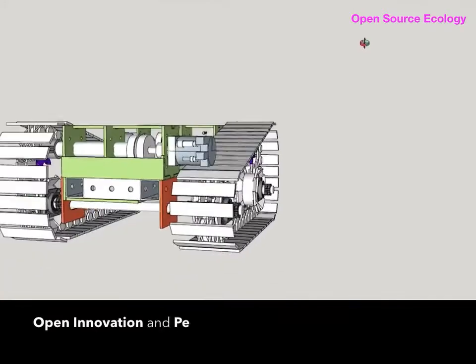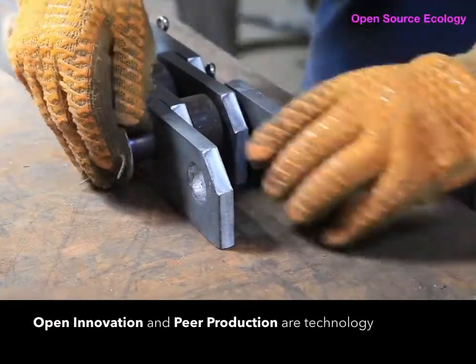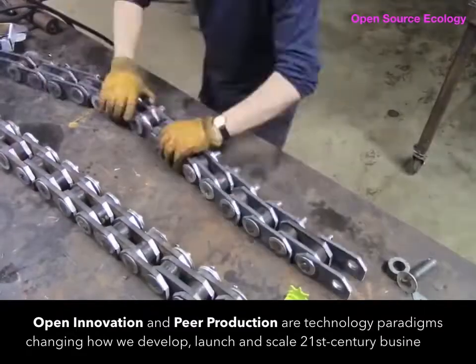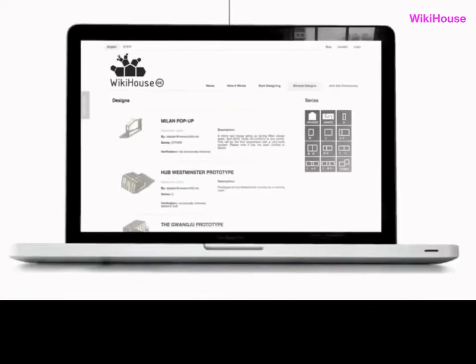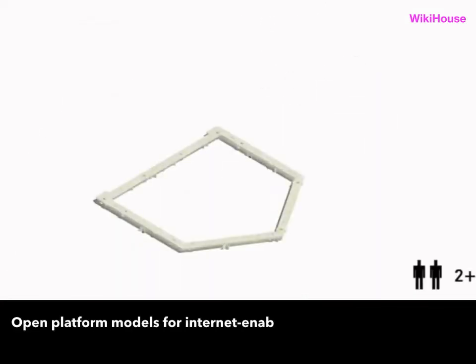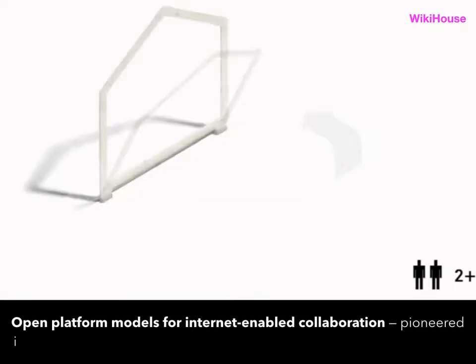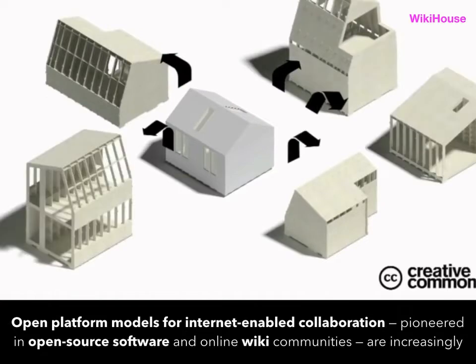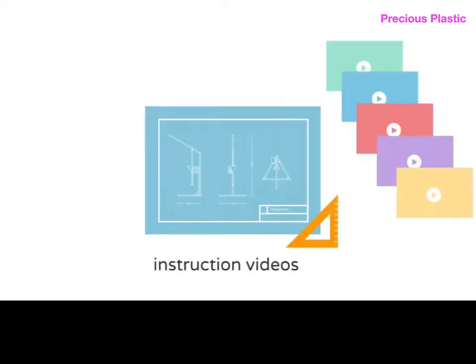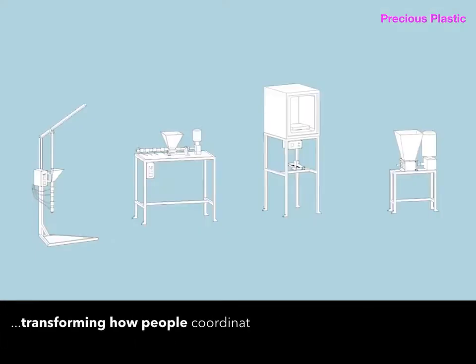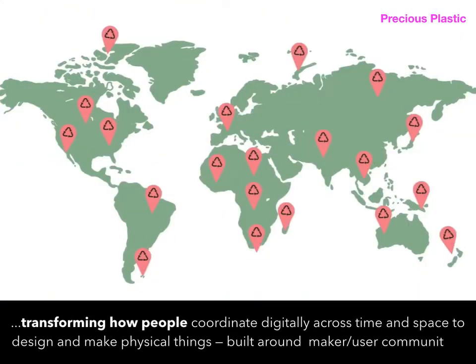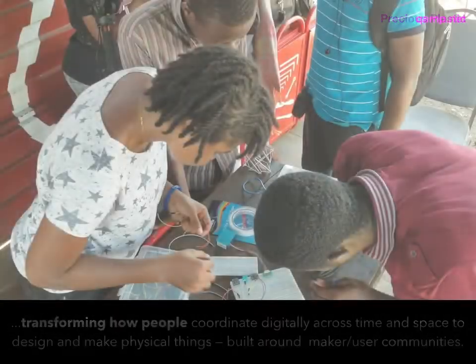Open innovation and peer production are technology paradigms changing how we develop, launch, and scale businesses in the 21st century. Open platform models for internet-enabled collaboration, first pioneered in open source software and online wiki communities, are increasingly transforming how people coordinate digitally across time and space to design and make physical things built around maker and user communities.